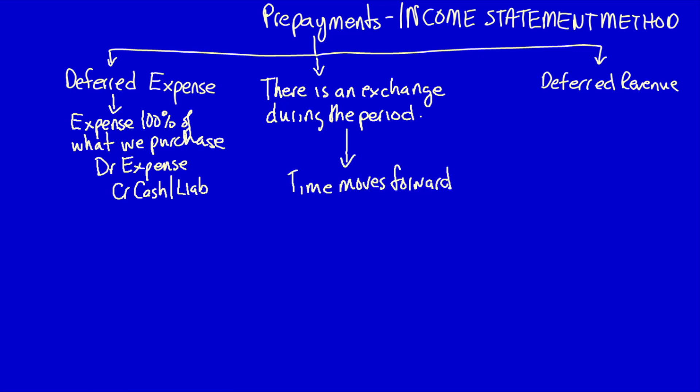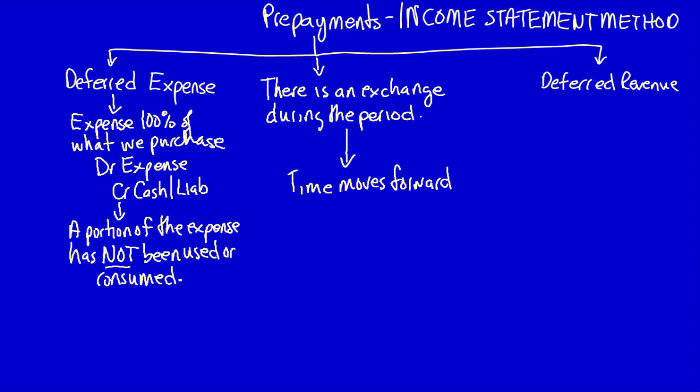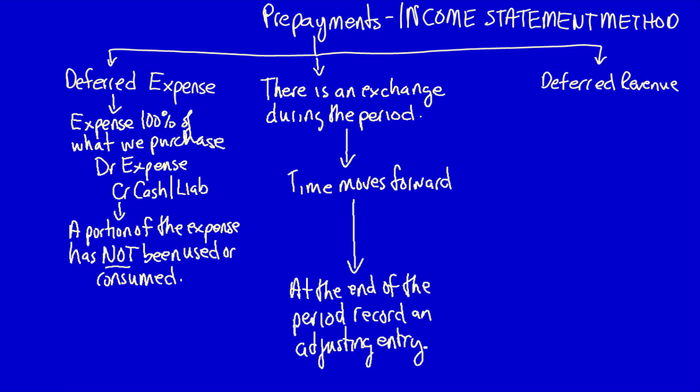Time moves forward and we discover that a portion of the expense has not been used or consumed. If it has not been used or consumed yet, we cannot leave it as an expense because it doesn't match the definition of an expense. Therefore at the end of the period we have to record an adjusting entry. We recognize the portion that has not been used or consumed, remove it from the income statement, and place it onto the statement of financial position — the balance sheet. We record a debit to an asset because it has future economic benefit, and a credit to the expense to draw down the expense for what has not been used or consumed. At the end of the period the expense only recognizes the portion that has been used or consumed during the period.